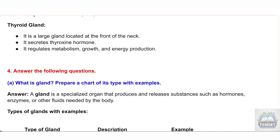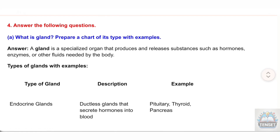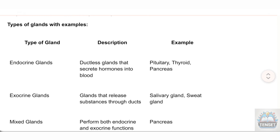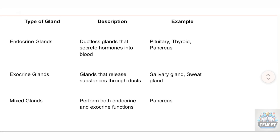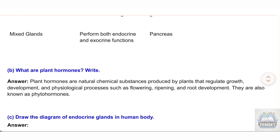Question 4: Answer the following questions. A) What is a gland? Prepare a chart of its types with examples. Answer: A gland is a specialized organ that produces and releases substances such as hormones, enzymes, or other fluids needed by the body. Types: Endocrine glands — ductless glands that secrete hormones into blood (e.g., pituitary, thyroid, pancreas); Exocrine glands — release substances through ducts (e.g., salivary gland, sweat gland); Mixed glands — perform both endocrine and exocrine functions (e.g., pancreas).